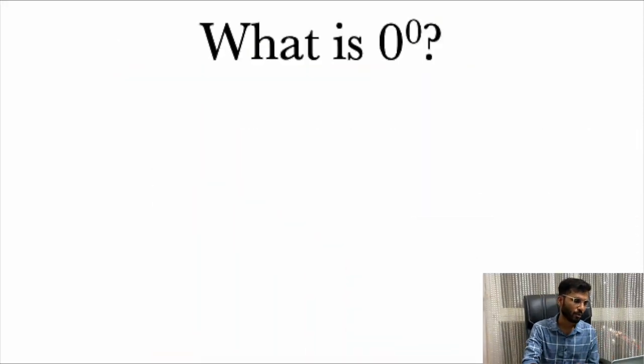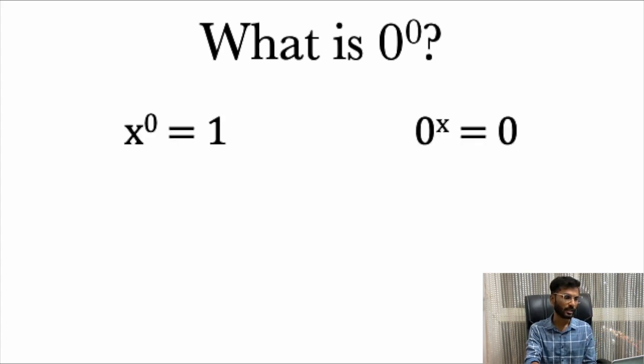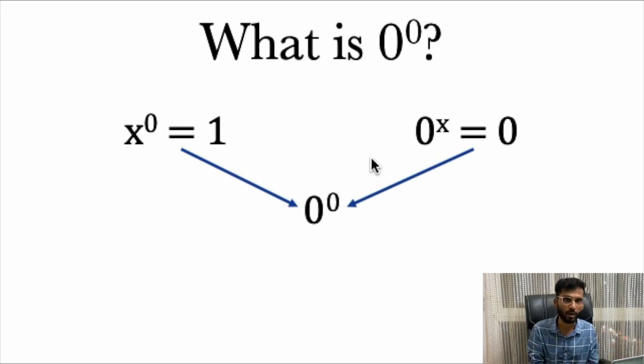Why is it important 0 power of 0? What is it? Because it overlaps the two properties of indices that is x^0 which equals 1 and 0^x which equals 0. Here you can see that in the power there is 0. If we consider the first property then the value should be 1. If we consider the second property when the base is 0 then the value should be 0. Which one of them is correct? Either one of them or maybe some another value we will find out.